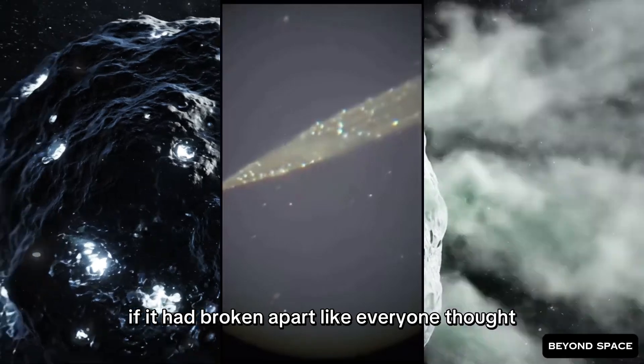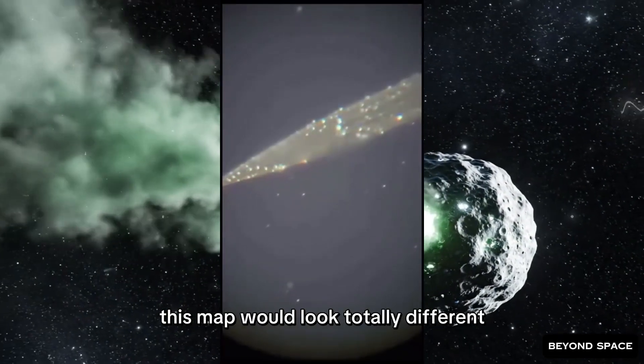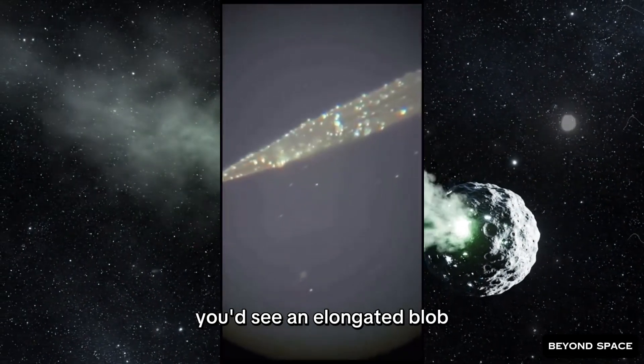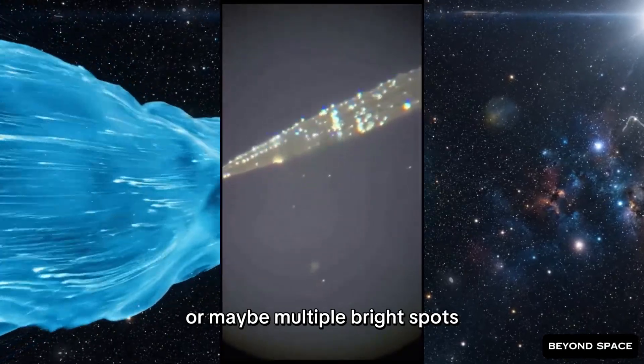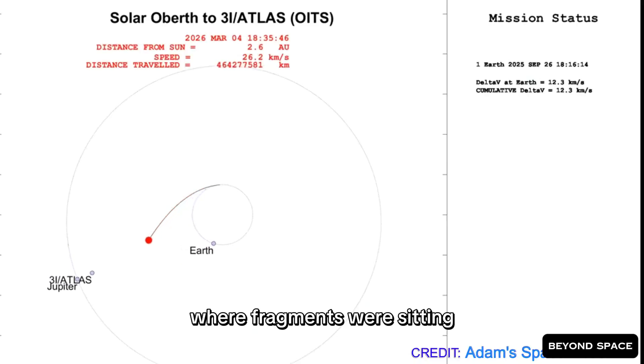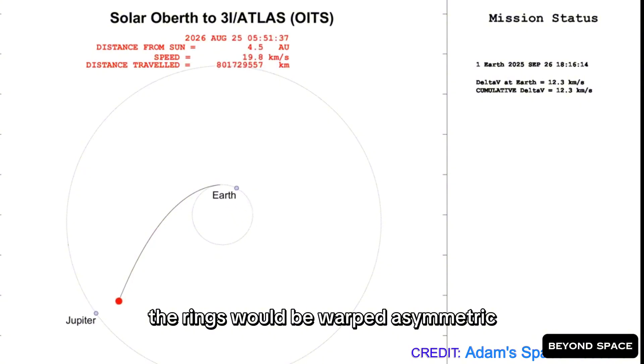If it had broken apart like everyone thought, this map would look totally different. You'd see an elongated blob, or maybe multiple bright spots where fragments were sitting. The rings would be warped. Asymmetric.